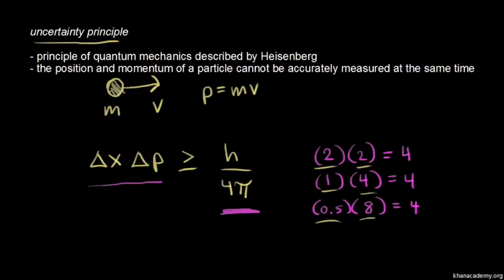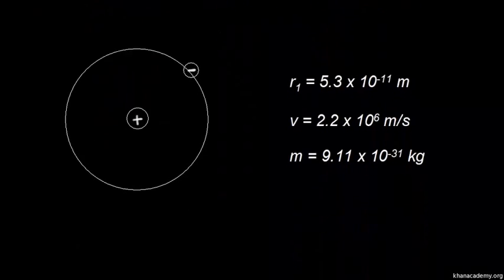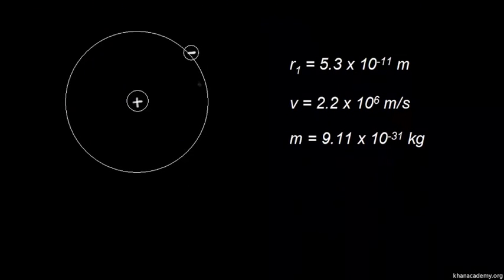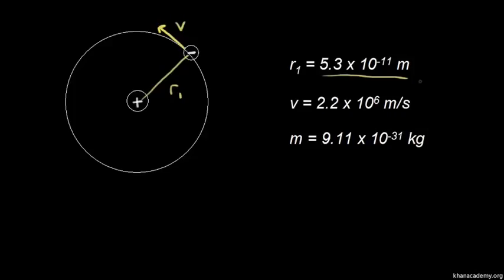Let's apply the uncertainty principle to the Bohr model of the hydrogen atom. In the Bohr model, a negatively charged electron orbits the nucleus like a planet around the sun, with a velocity in some direction. The Bohr model is useful because it let us understand quantized energy levels. The radius for an electron in the ground state — the first energy level — is 5.3 times 10 to the negative 11 meters. The diameter of that circle is two times that radius, giving 1.06 times 10 to the negative 10 meters, which is a rough estimate of the size of the hydrogen atom.